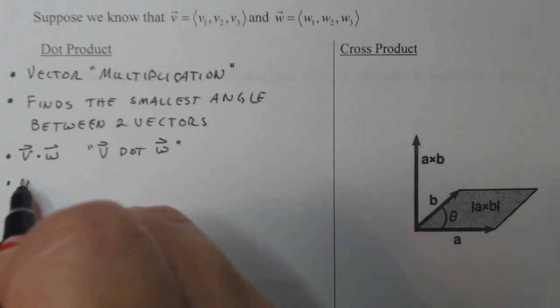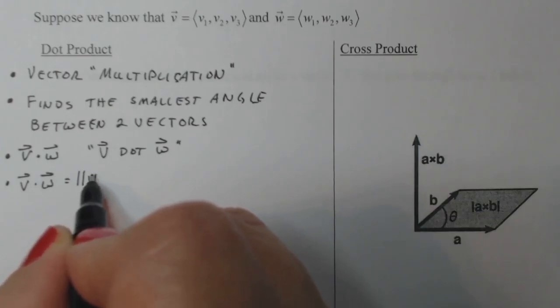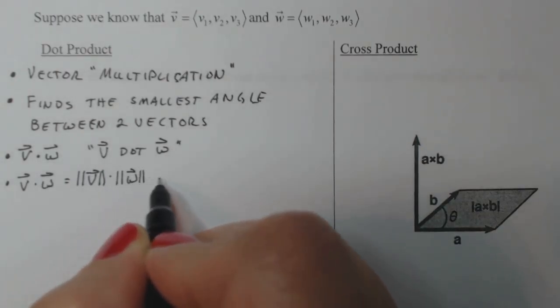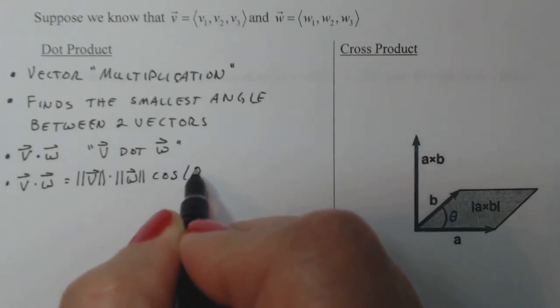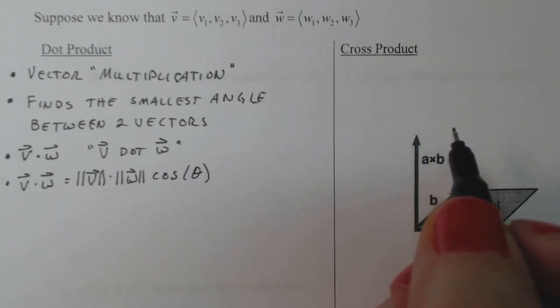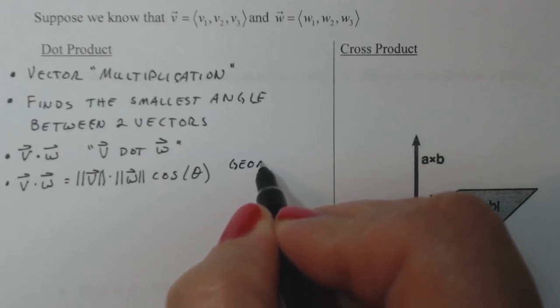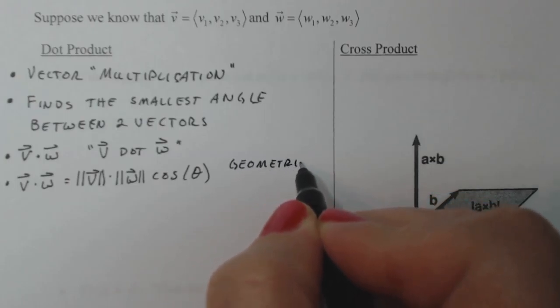There's a geometric formula for the dot product that's equal to the magnitude of V times the magnitude of W times the cosine of the angle, the smallest angle between V and W. We consider this a geometric version.